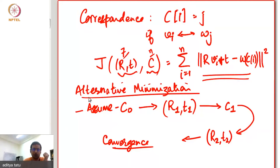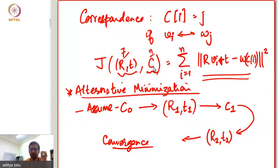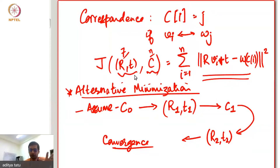By convergence, I mean these correspondences and these optimal rigid transformation parameters are not changing much — at that point you stop. In some sense, that's the best we can do. You can only make some assumptions and then try to improve on those assumptions. You can see why this process is called alternating minimization: assume one is given, optimize for the second, then use that to improve the first.